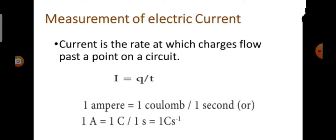We can measure the value of current and express it numerically. Current is the rate at which charges flow past a point on a circuit. That is, if q is the quantity of charge passing through a cross section of a wire in time t, quantity of current is represented as i equal to q by t.